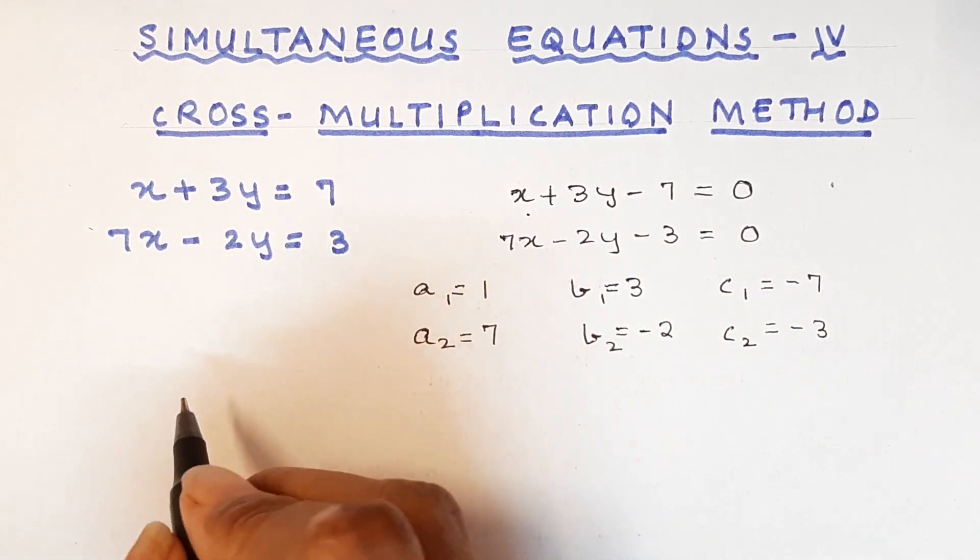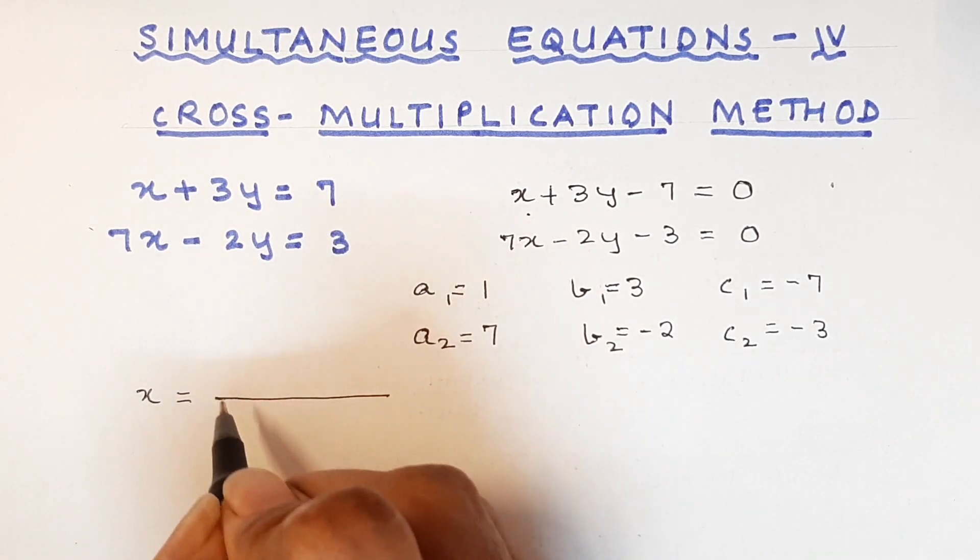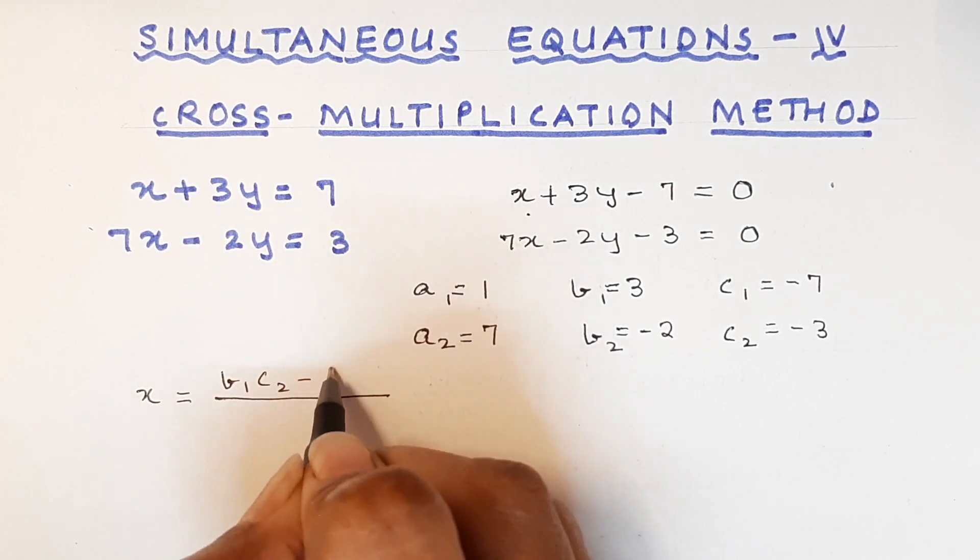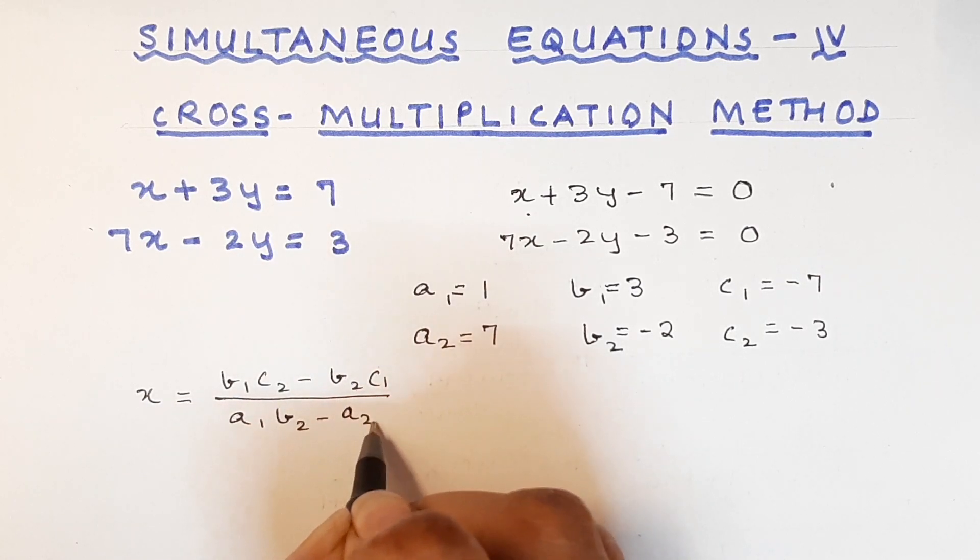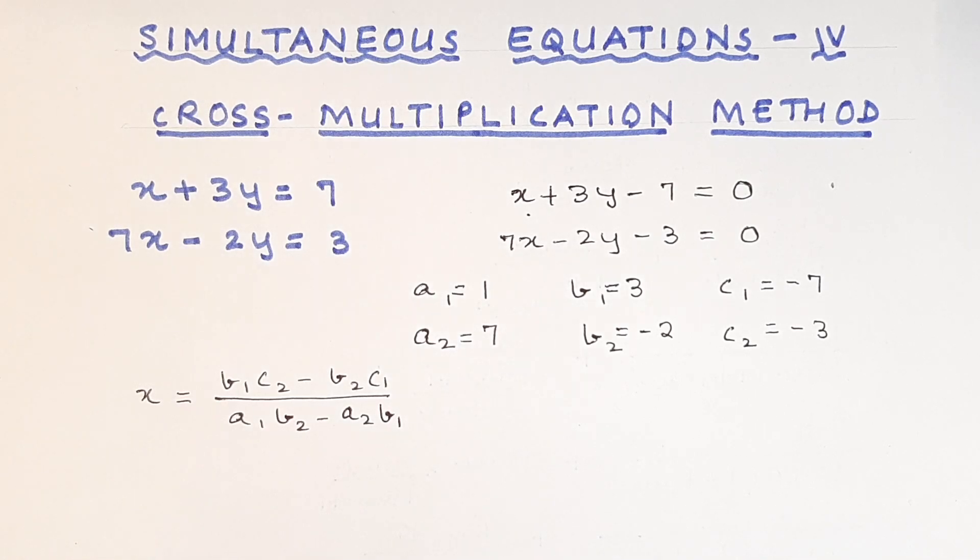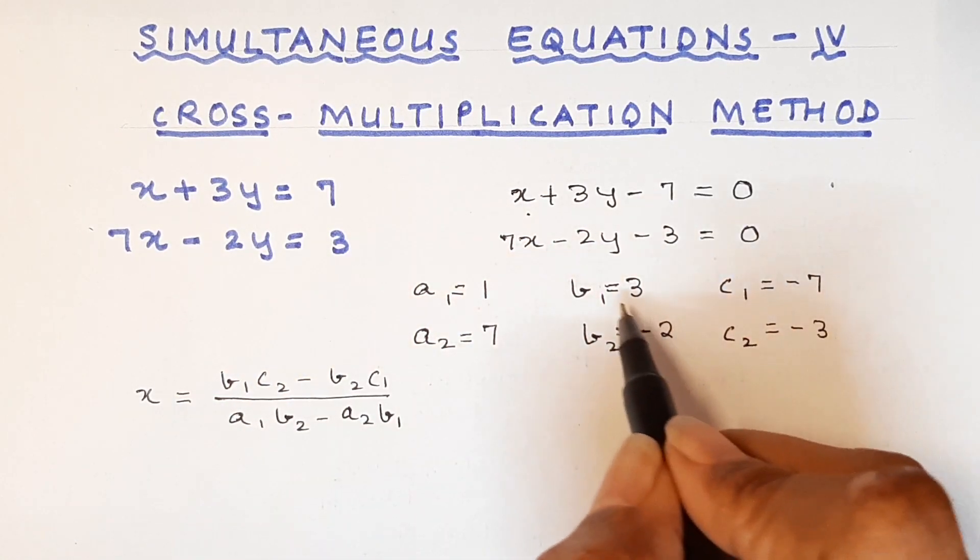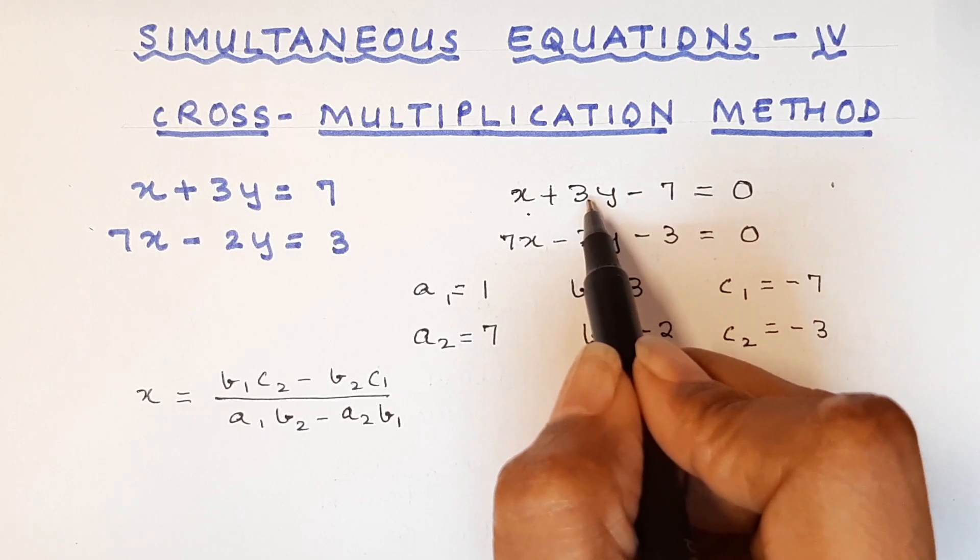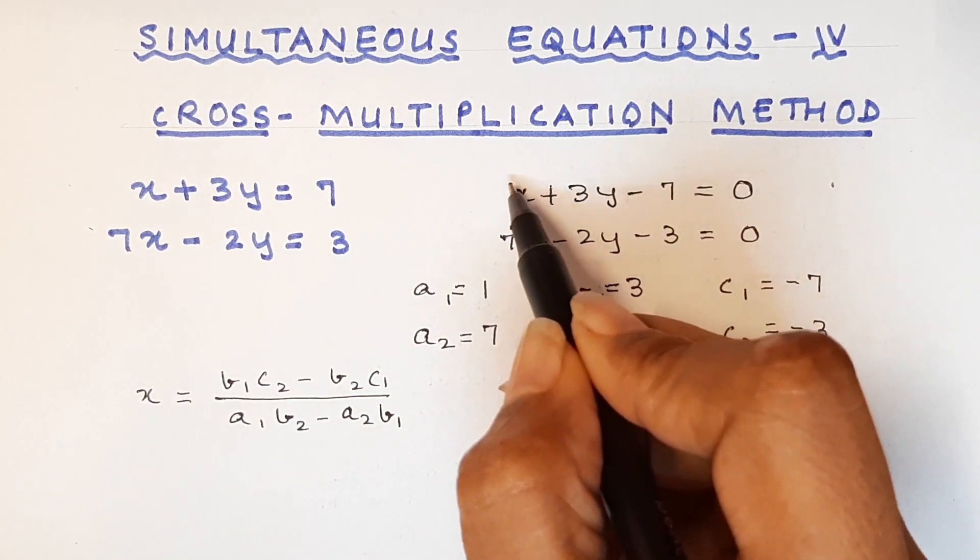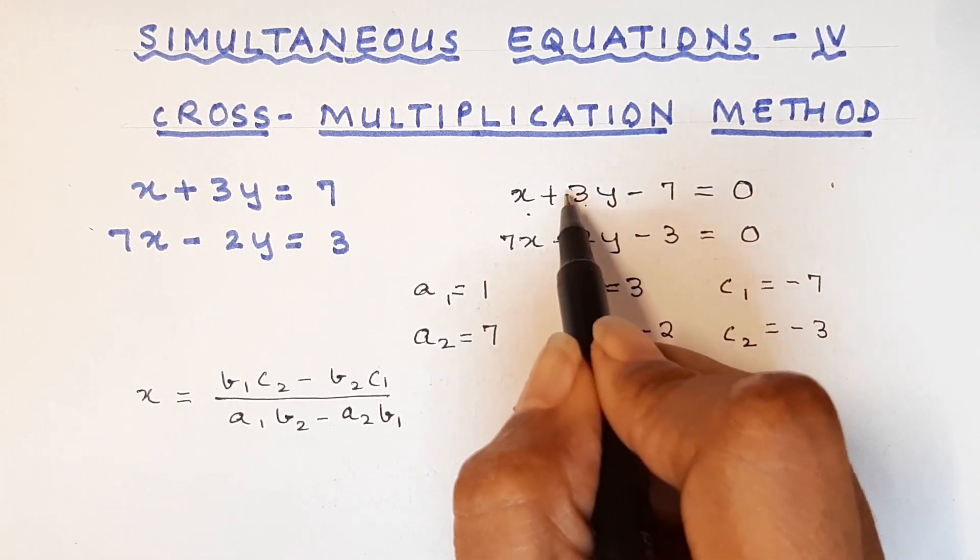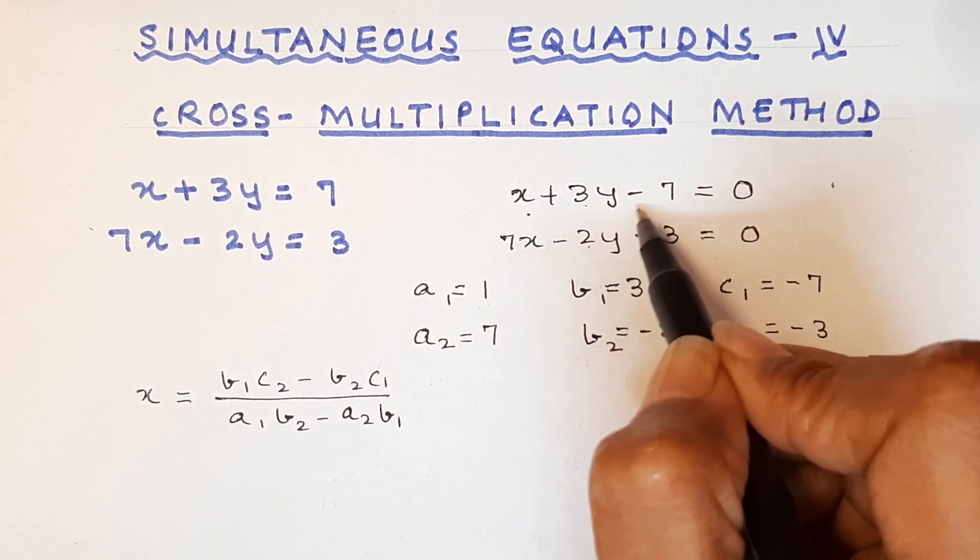Now once we have understood this, we have to remember the formulas. Our x value will be given as b1c2 minus b2c1 upon a1b2 minus a2b1. Now you will say it is looking complicated, but let us understand what is our b1c2. If I am taking x, I will not take the coefficient of x in the numerator. I will take b and c which means I will do crisscross like so. So this is your b1c2 and this is your b2c1.